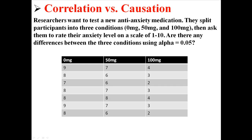Here's an example of a true experiment. Researchers want to test a new anti-anxiety medication where they split participants into three conditions: 0, 50, or 100 milligrams. They then ask them to rate their anxiety on a scale of 1 to 10. Are there any differences between the three conditions using alpha 0.05?